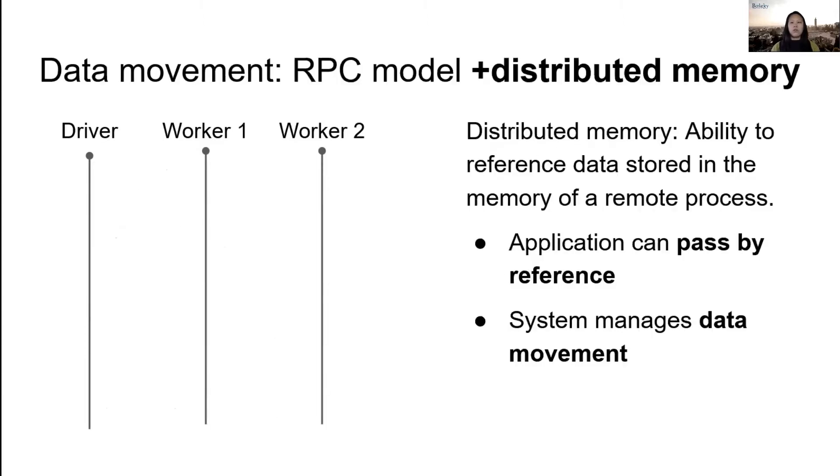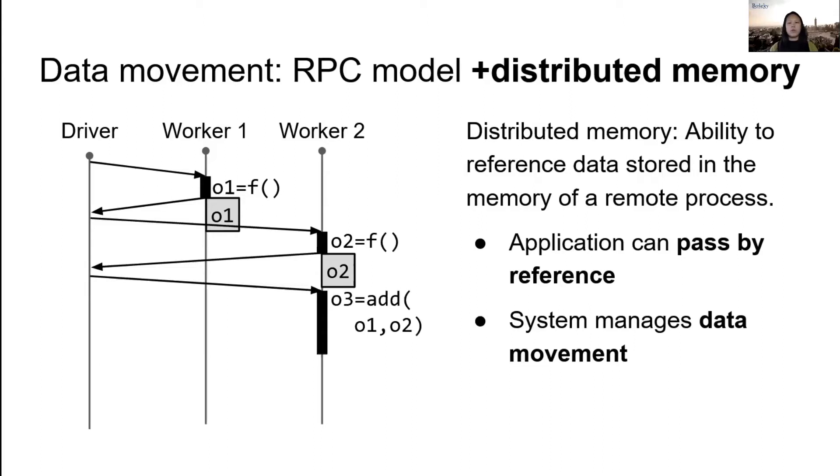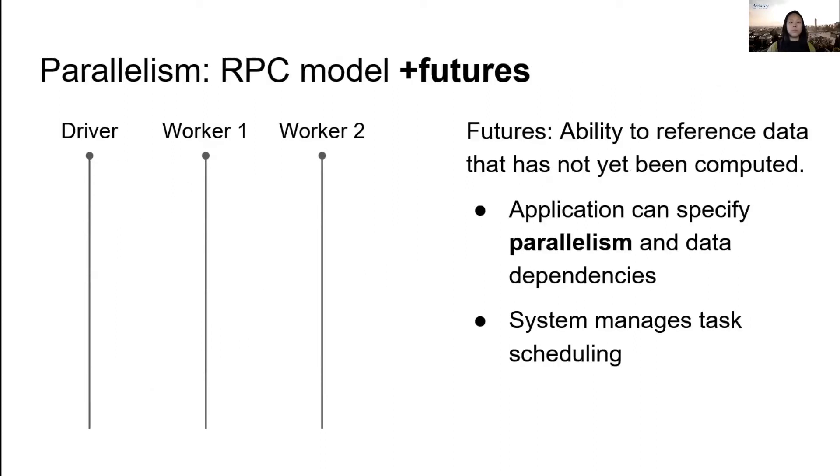Distributed futures allow the system to manage these functionalities on behalf of the application. First, let's look at data movement. The main issue before was that we have to copy o1 and o2 back to the caller just so they could be copied into the add RPC. This can get very expensive if o1 and o2 are large. Many systems get around this by using distributed memory. After executing the first task, instead of sending o1 back to the caller, we can just store o1 in memory on the remote node before replying. We can do the same for o2, and now when we call the add RPC we pass the objects by reference instead of by value.